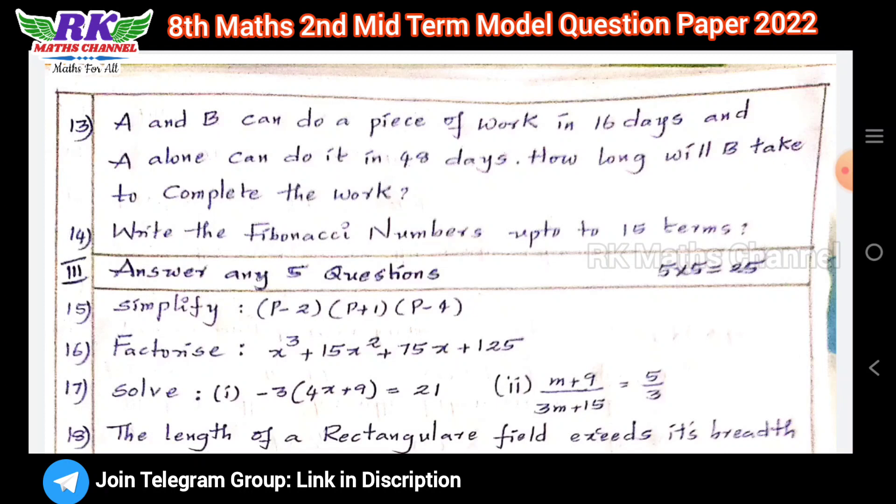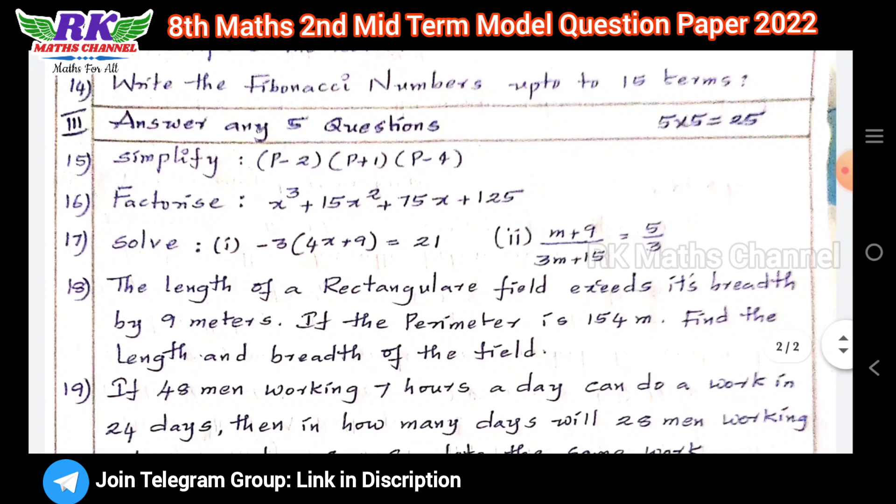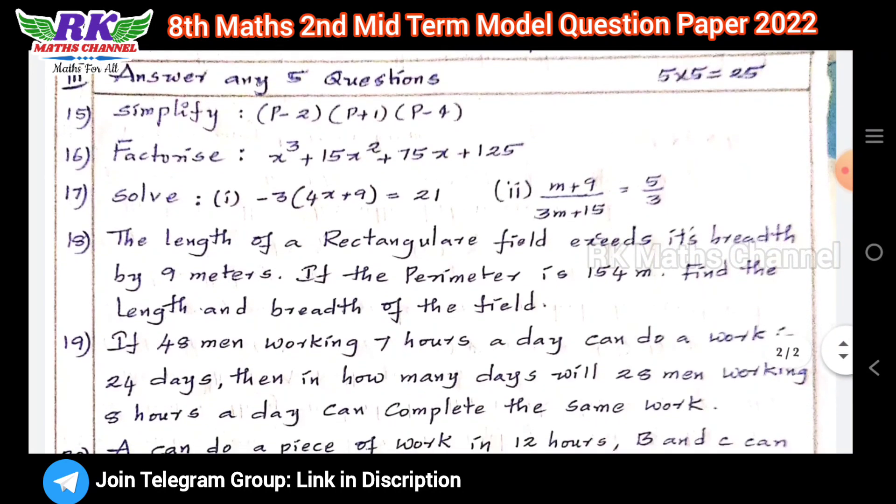Next section: answer any 5 questions, five questions at 5 marks each equals 25 marks. Seven questions given. First question number 15: simplify (p-2)(p-1)(p-4).